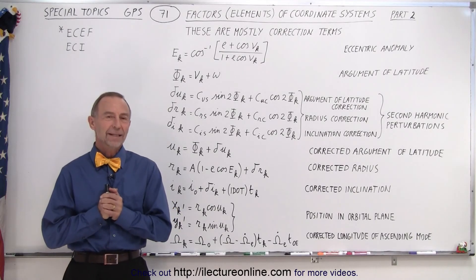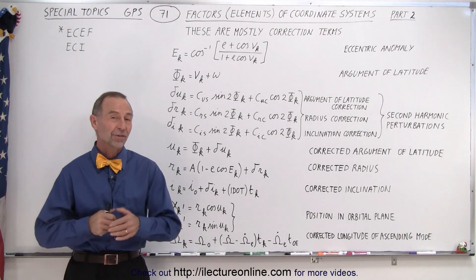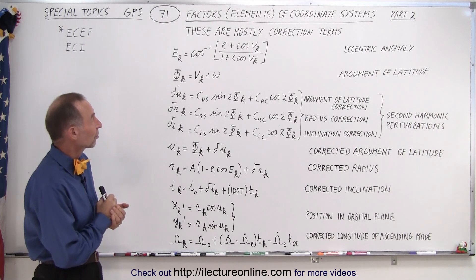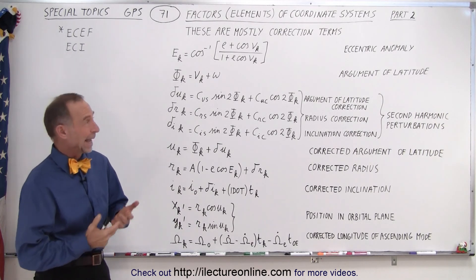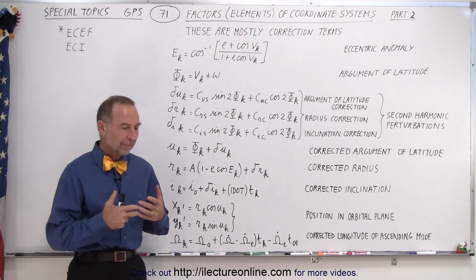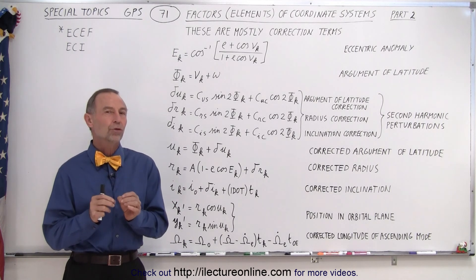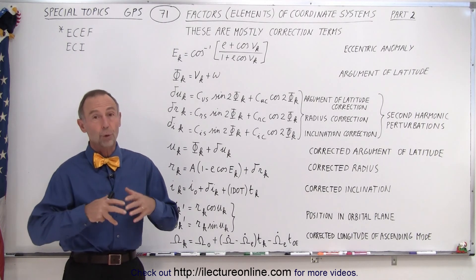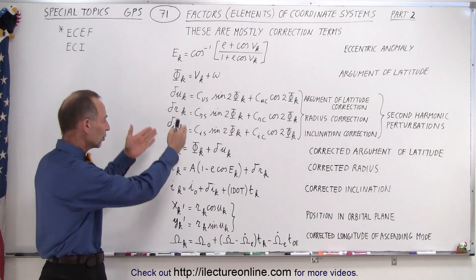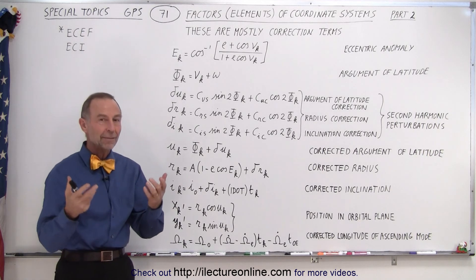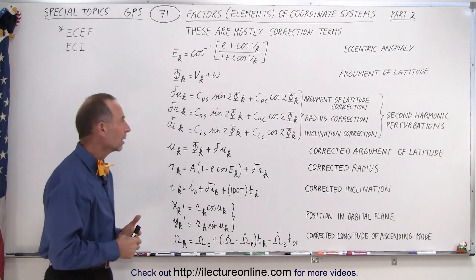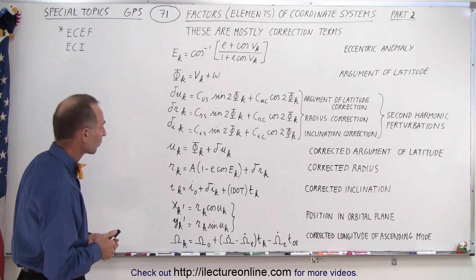Welcome to my lecture online. Here's our second part of what we call the factors of coordinate systems, or officially called elements of coordinate systems. These are essentially a bunch of variables that are correction terms for orbital parameters. Some of the input data that goes into these calculations is embedded in the ephemeris data that we get from the SVs down to the ground station or down to the receivers.